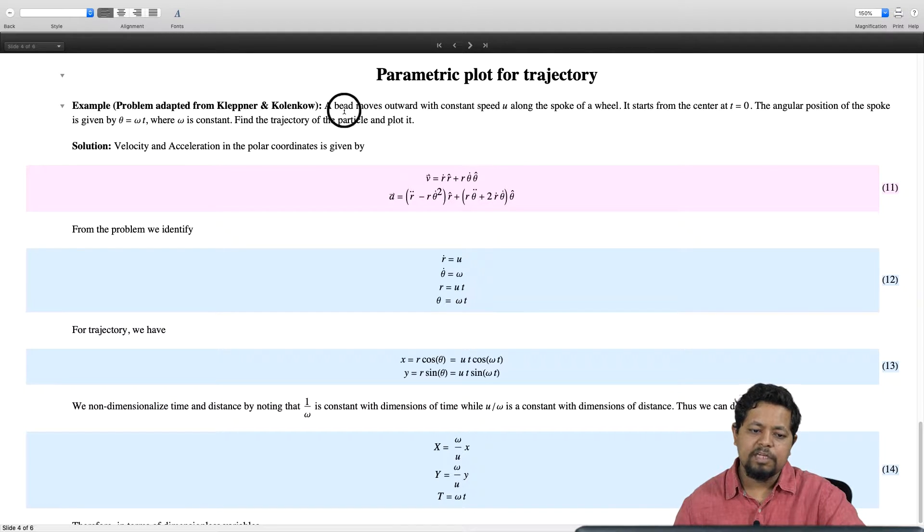In this problem adapted from Kleppner and Kolenkow, a bead moves outwards with a constant speed u along the spoke of a wheel. It starts from the center at t equal to 0. The angular position of the spoke is given by theta equal to omega t where omega is a constant. Find the trajectory of the particle and plot it.